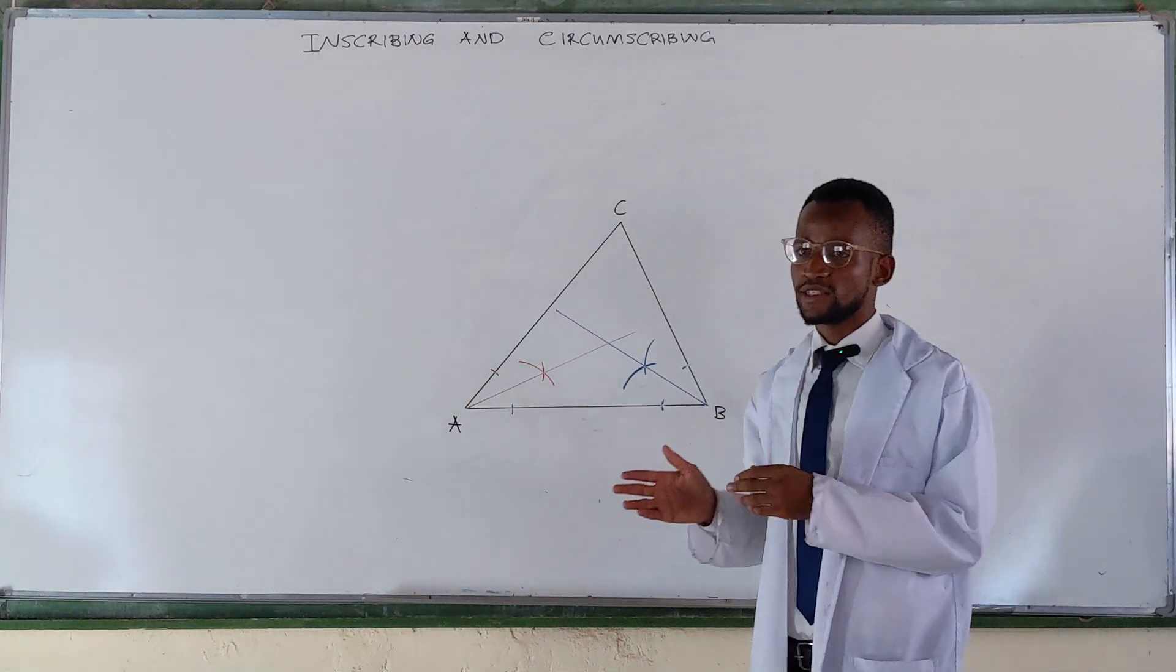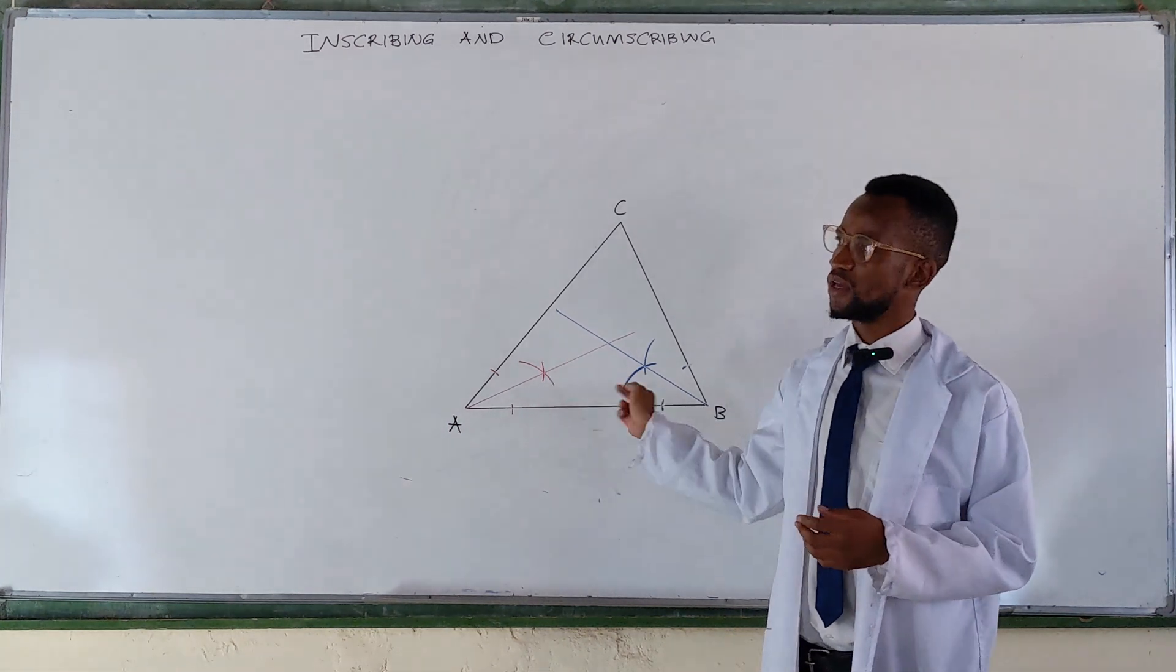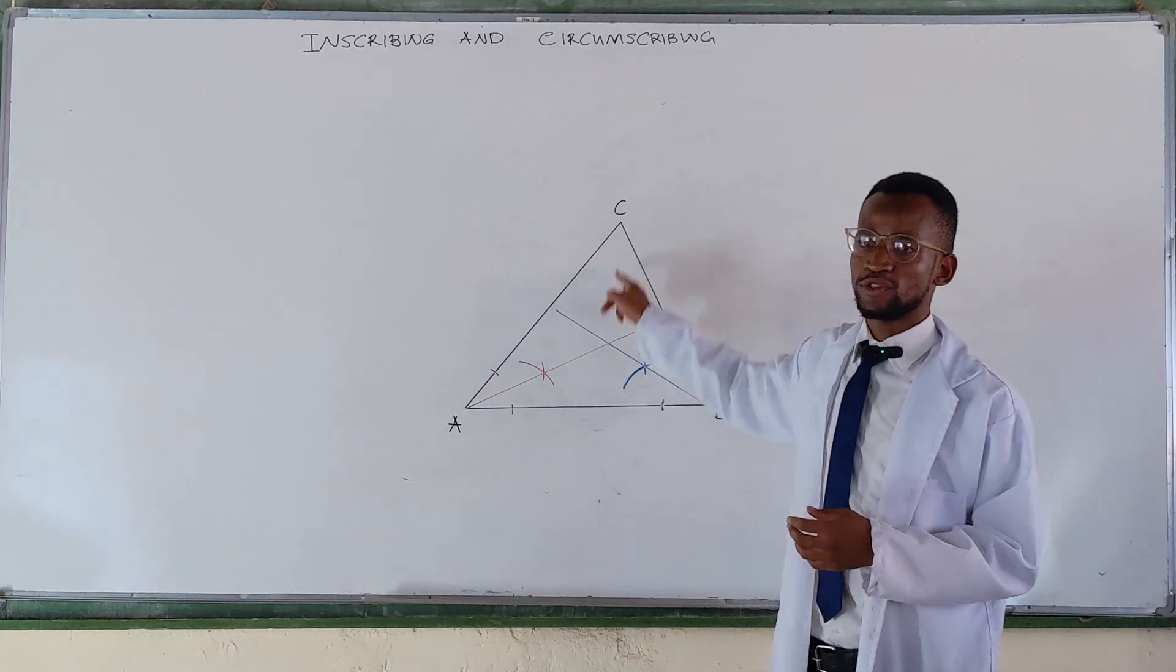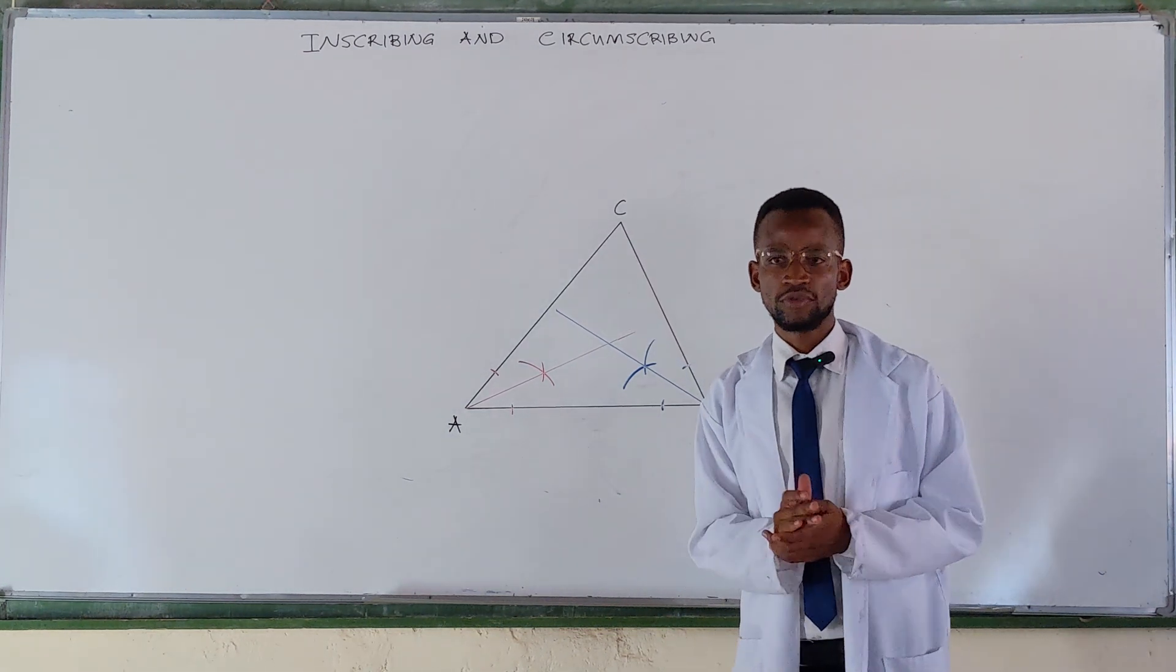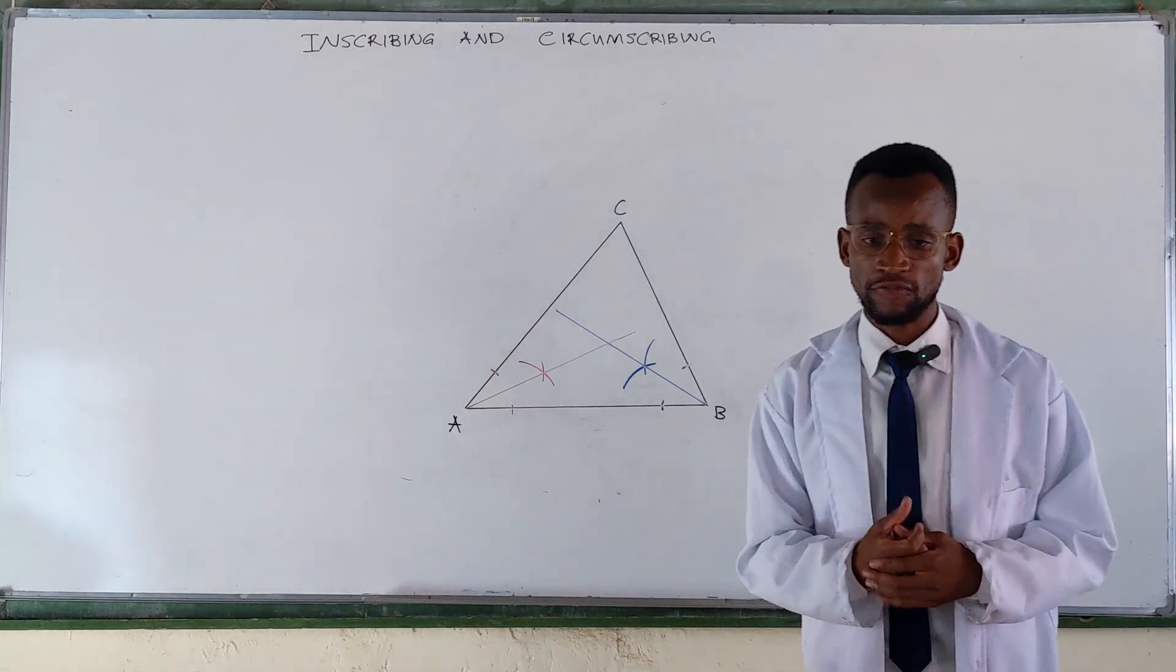So the reason why we bisect just any two angles is even if we were to bisect this other angle, it would still pass through the same point. So two are enough, or they are sufficient.